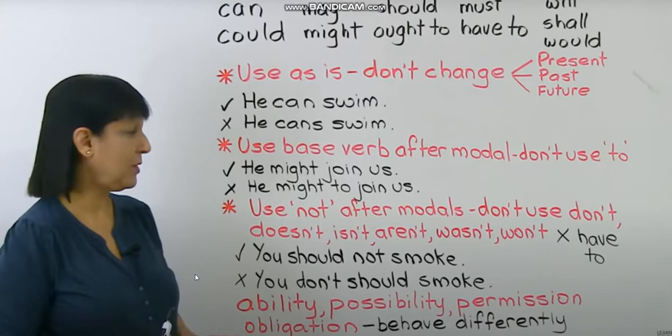Base verb means the normal form of the verb. We always have to use the base form — the normal form — after the modal. Don't use 'to.' For example, 'he might join us' — here 'might' is the modal verb, and we use 'join' without any other form like 'joining' or adding 'to.' 'He might to join us' is wrong.